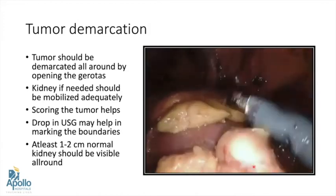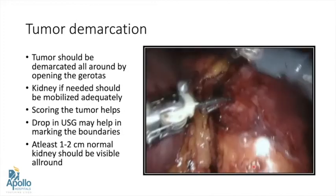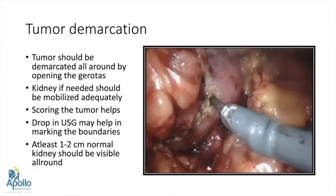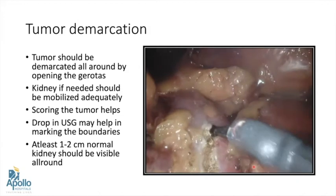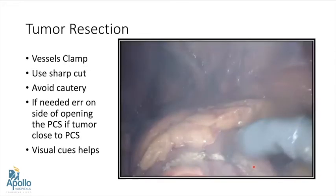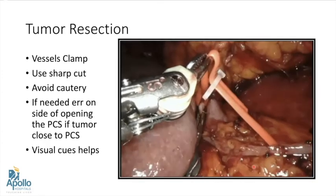We should see normal parenchyma all around the tumor for 1–2 cm. Drop-in ultrasound is very useful, especially for endophytic tumors. Scoring or marking the tumor serves two purposes: it tells us if we have dissected all around and gives us confidence, and it provides a margin from which we can proceed. The kidney should be completely mobilized depending on the position of the tumor.